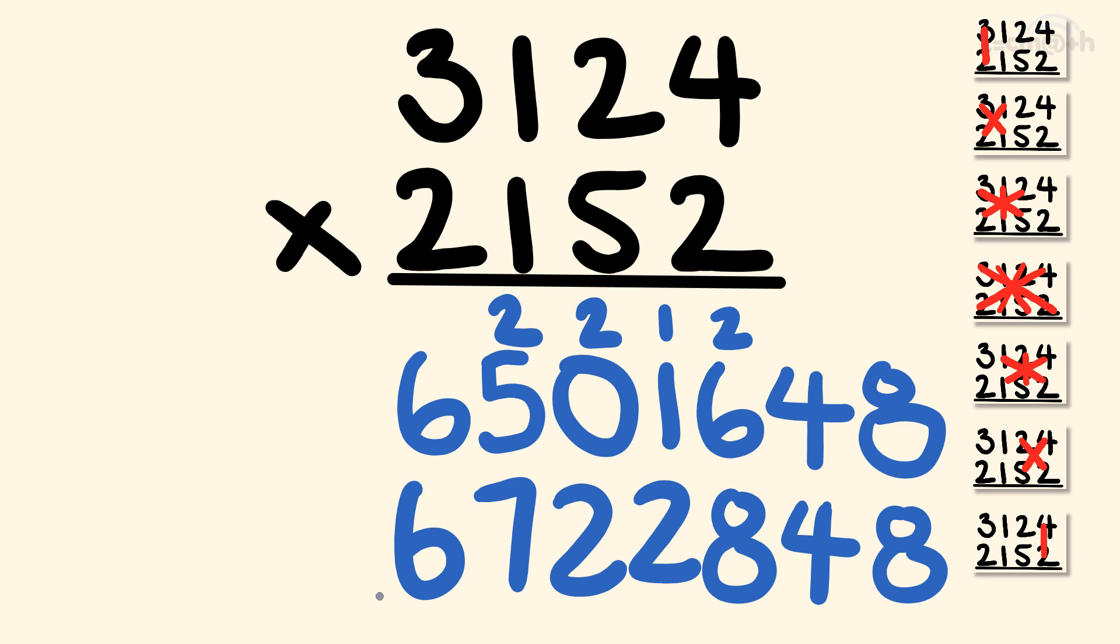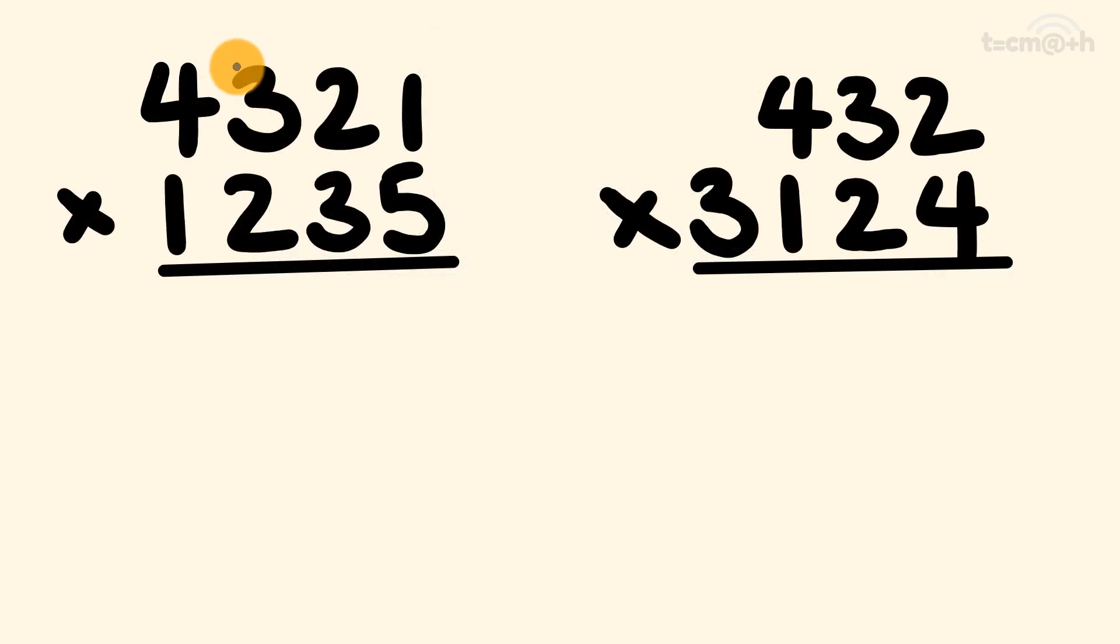So how's that? That is the easiest way of multiplying big numbers like these using a pen and paper, right? And with a little practice, a couple of these, you'll be doing these no problem. So what about a couple of these that you can do right now? So here's a couple of examples for you. We have 4,321 multiplied by 1,235. And after this, make it a little bit harder. See if you can spot the modification, how you're going to do this. 432 multiplied by 3,124. And I'm going to show you how to do that modification when I go through the answers.